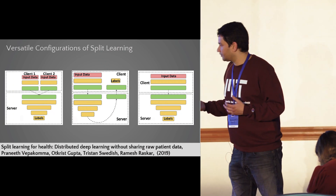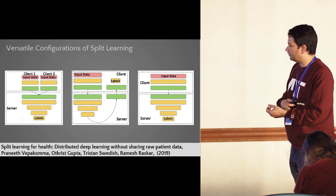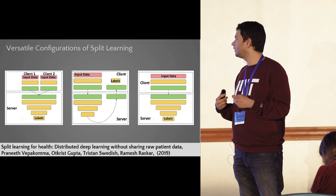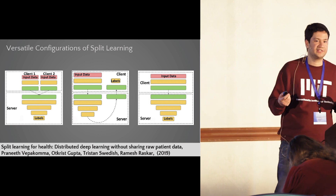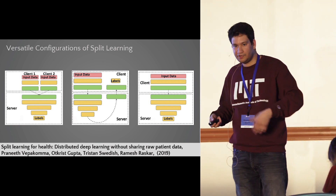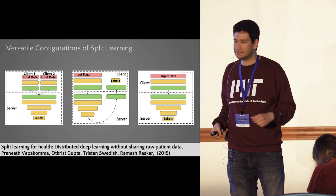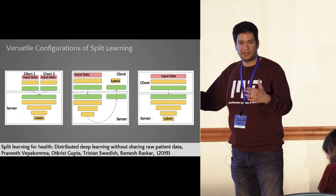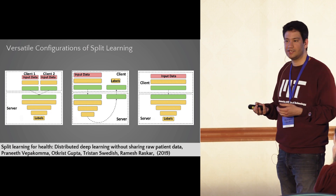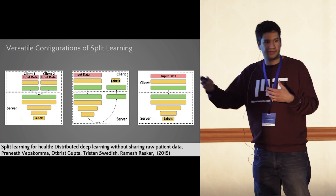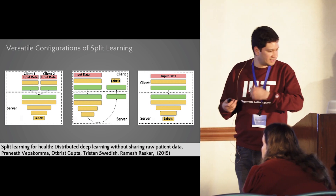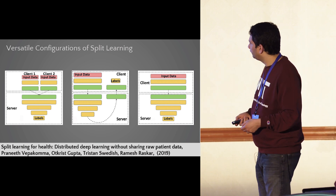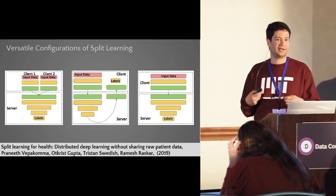There are other versatile configurations from a 2019 paper. The first is a vertically partitioned setting where multiple clients each have different variables — they process locally with no data sharing, then the split-layer activations are merged (a standard merge operation in TensorFlow or PyTorch) and sent to a server. The second is the no-label-sharing version where both labels and data do not leave the client. There are other topologies as well that split learning naturally extends to.